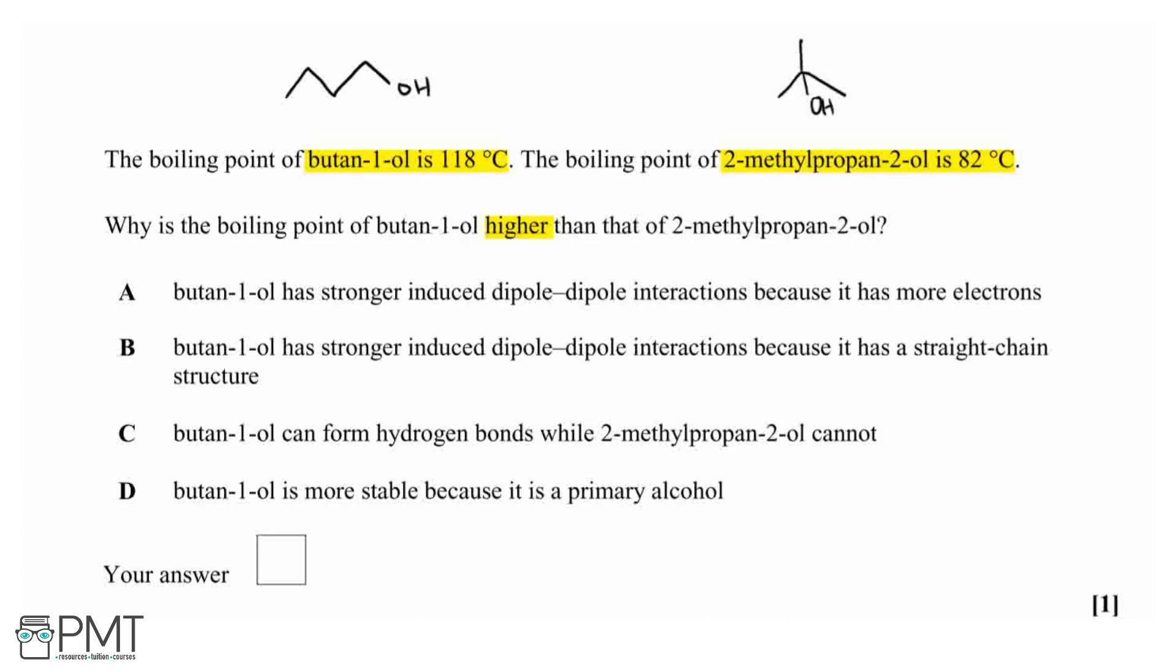What we can see here is that we've got a pair of structural isomers, therefore they're going to have the same molecular formula, hence they would also have the same number of electrons. They're both alcohols, so they're both going to have hydrogen bonding, and we've got a primary alcohol for butan-1-ol, and 2-methyl-propan-2-ol is a tertiary alcohol.